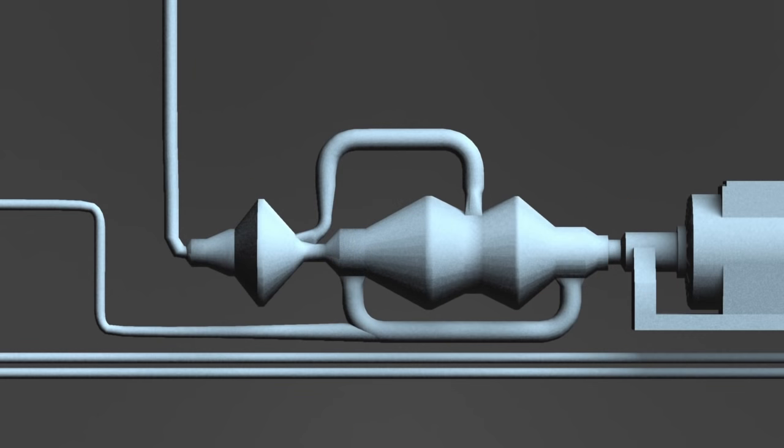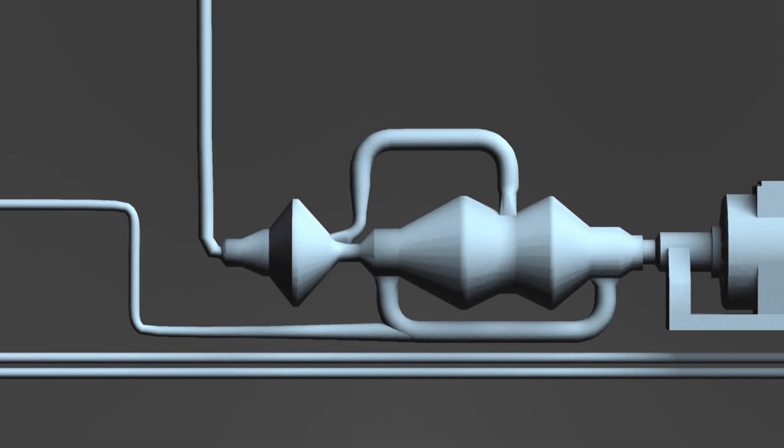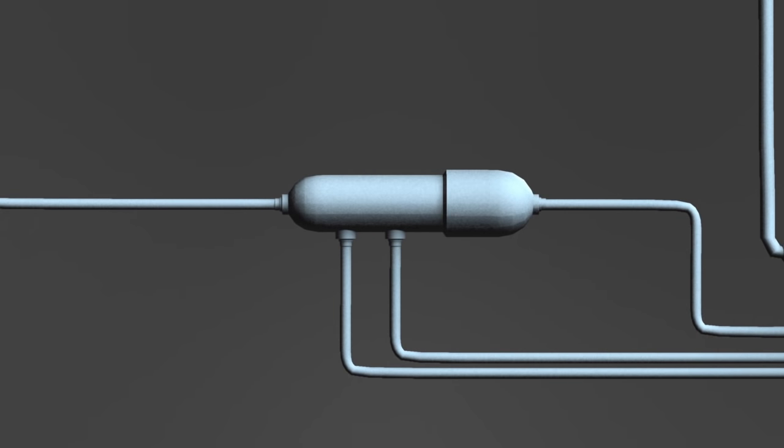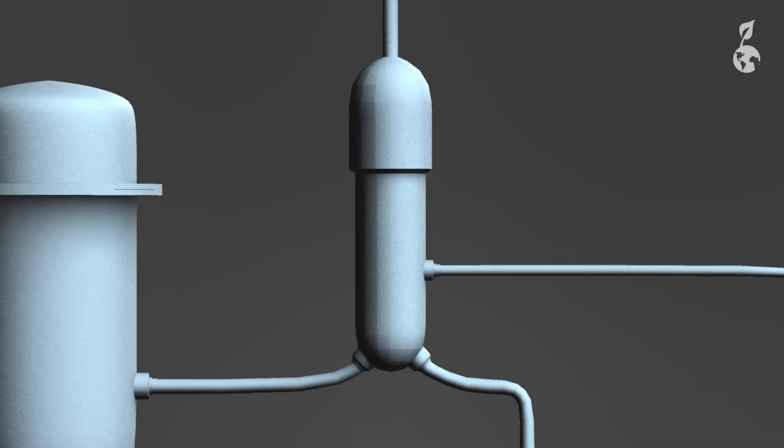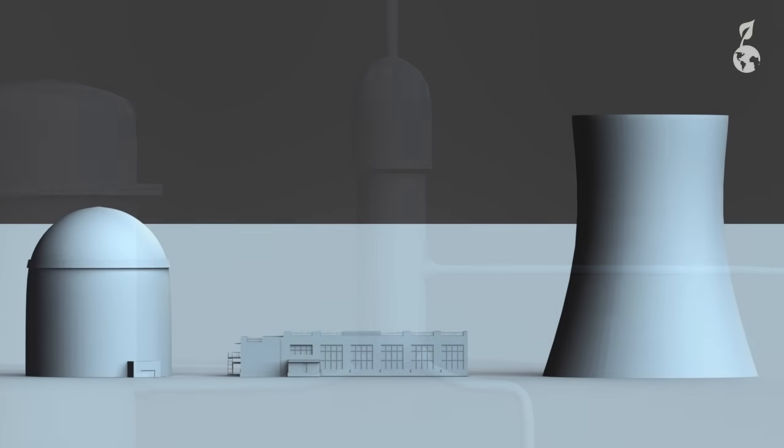The steam is converted again into liquid form in a condenser and then returned back to the steam generator. The water needed for this often comes from an adjacent river or is cooled in a cooling tower.